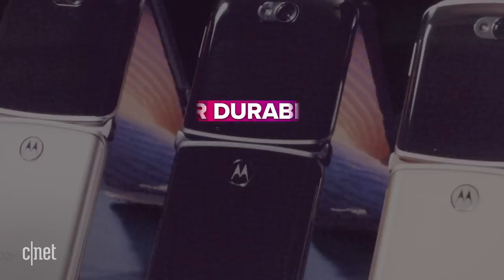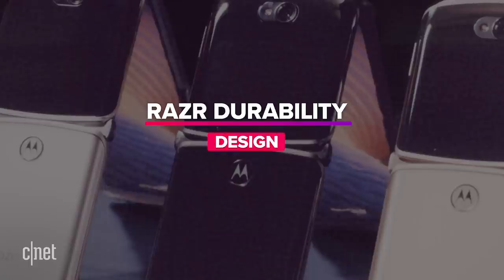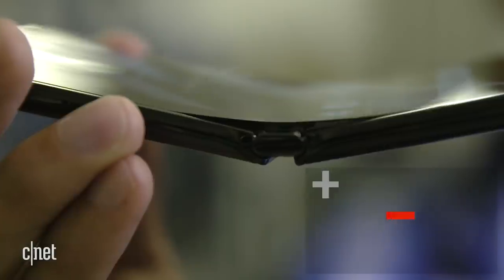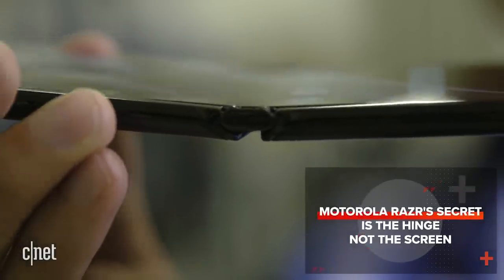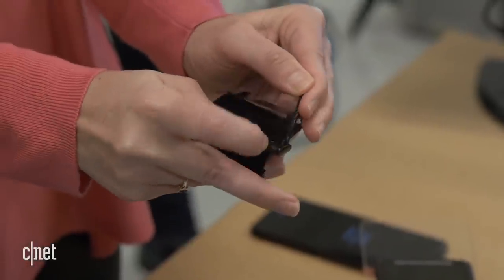So what allows the Razr to achieve this screen durability? Well it comes down to three things: the phone's design, the screen, and the hinge. In fact, if you want to learn more about the hinge, take a look at a video I made last year about its design and how it allows the Razr to fold flat.